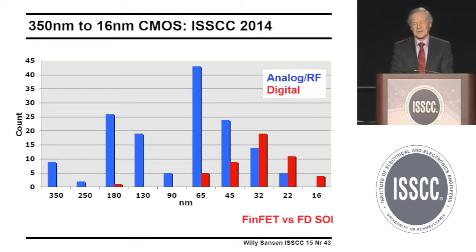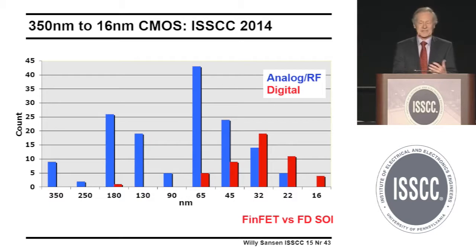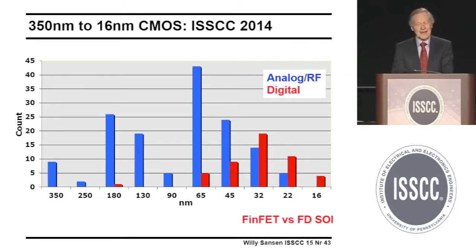Looking at the number of papers versus channel length, analog is always a bit behind. So going from 5 micron to 5 nanometer, one of the questions is: why is that, what can you do about it, and are we going to do as well as digital towards 5 nanometer?